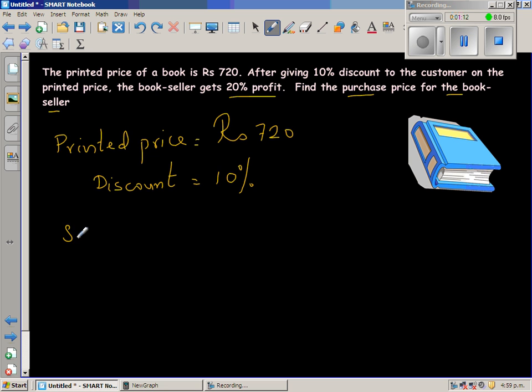So you can see the sale price would be 720 minus 10% of 720. This is the book which is costing 720 rupees, and 10% of 720 is 72.